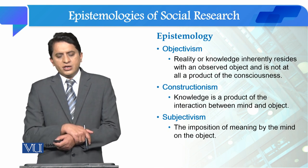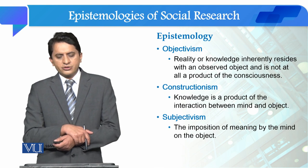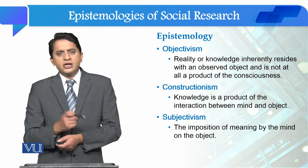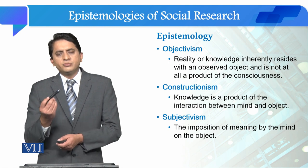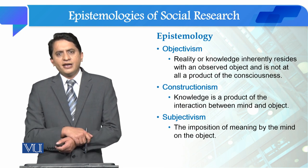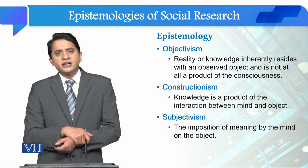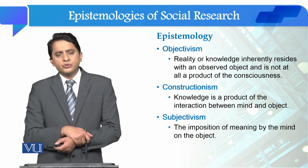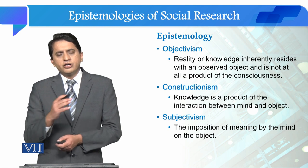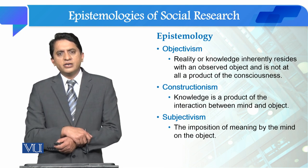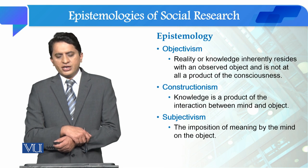The fifth epistemology is constructionism. In this epistemology, we believe that knowledge is the product of interaction between the mind and the object. How we observe an object depends on our mind — how we conceive it. When we go with this theoretical assumption, our epistemology becomes constructionism.